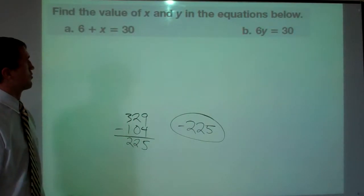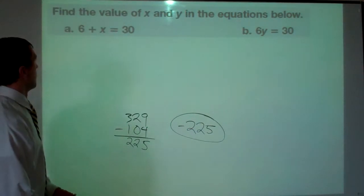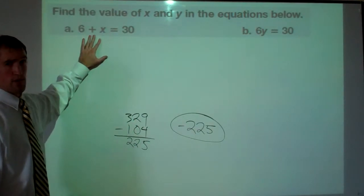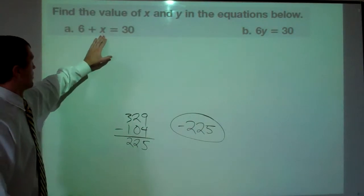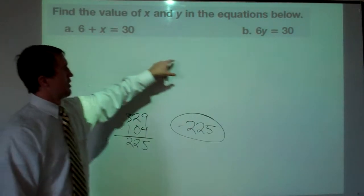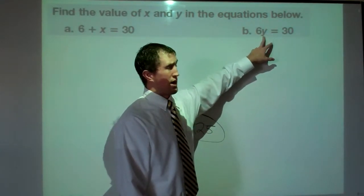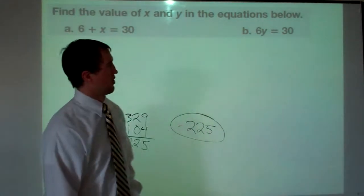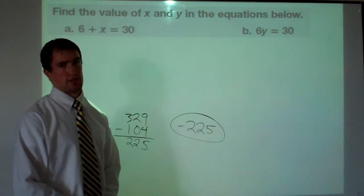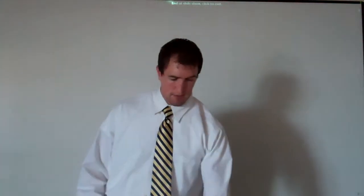For solving for an unknown, we use inverses. Thirty minus six gives us x, so x equals 24. For six times y equals 30, the inverse of multiplying is dividing, so 30 divided by 6 gives us y equals 5. All right, I don't have the assignment on me right now but it is out on the homework link if you're interested.